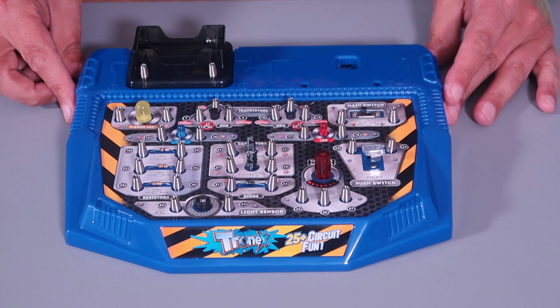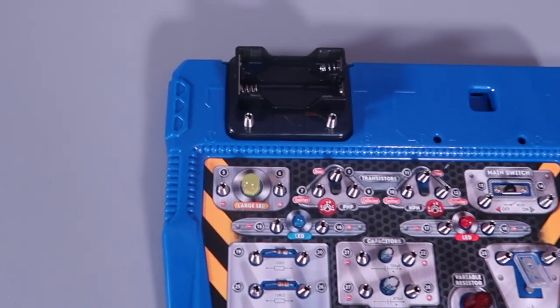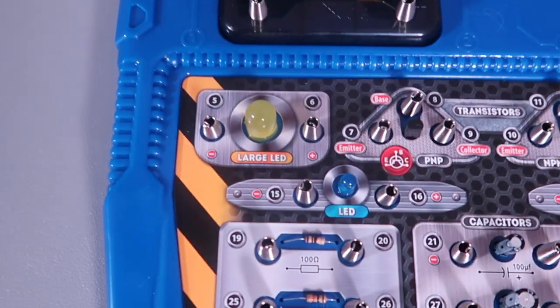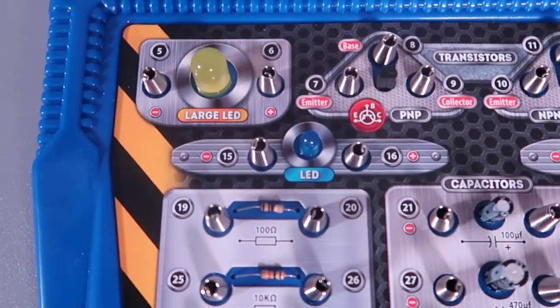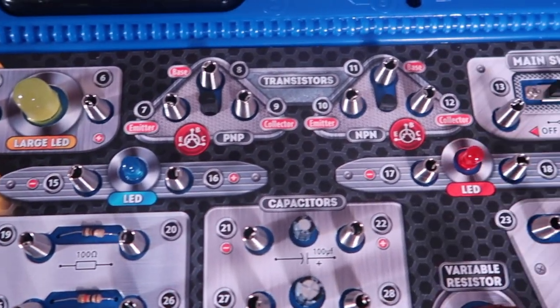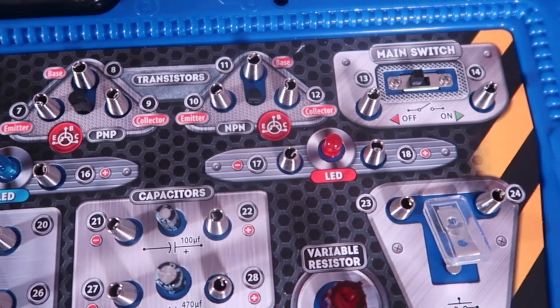The most obvious component is the circuit board which has a series of electronic components built in, so there's no small parts to lose. It's all ready and there to connect up.